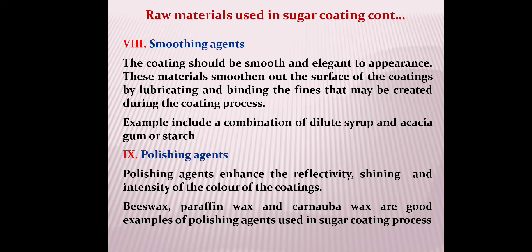Polishing agents enhance the reflectivity, shining, and intensity of the color of the coatings. Paraffin wax and carnauba wax are very good examples of polishing agents used in the sugar coating process.